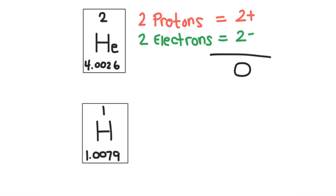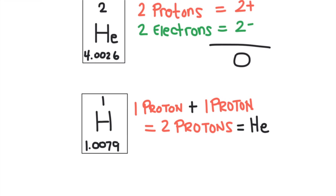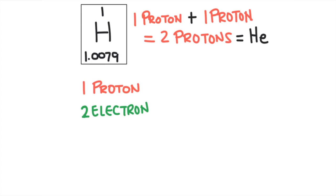If hydrogen gained an extra proton, for example, it would no longer be hydrogen, because its atomic number would now be two instead of one. It would be helium, not hydrogen. Electrons, on the other hand, are gained and lost all the time. If hydrogen gained an extra electron, it would still be hydrogen, because it still just has one proton. The atomic number is still one, but the number of electrons increased from one to two.